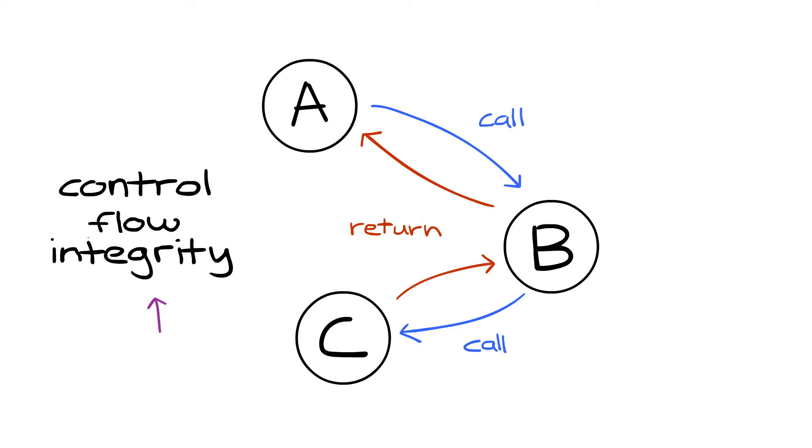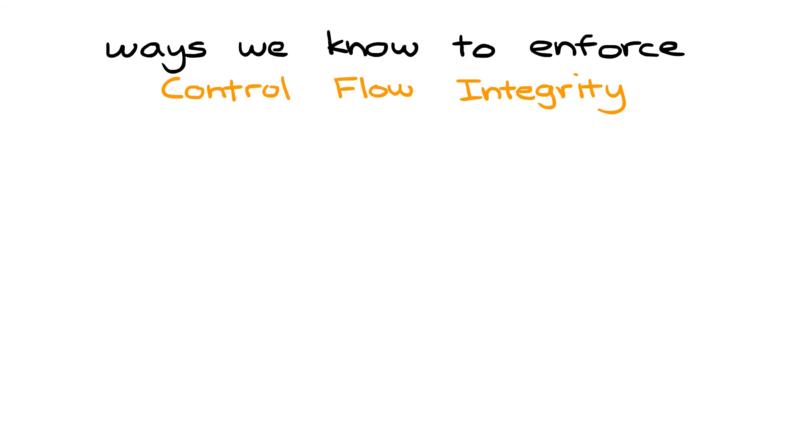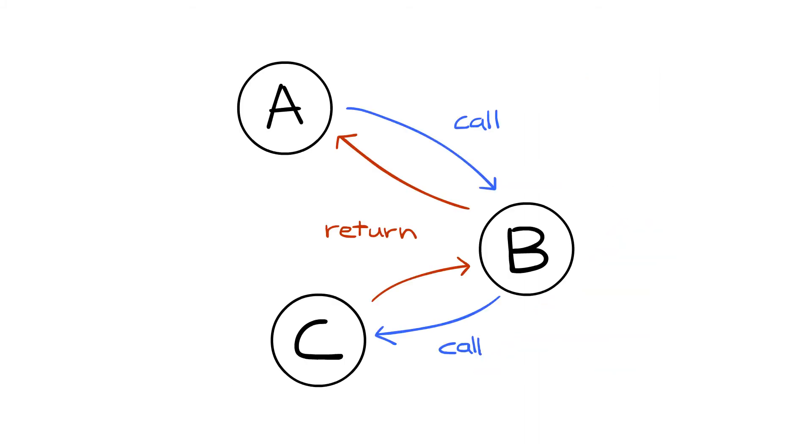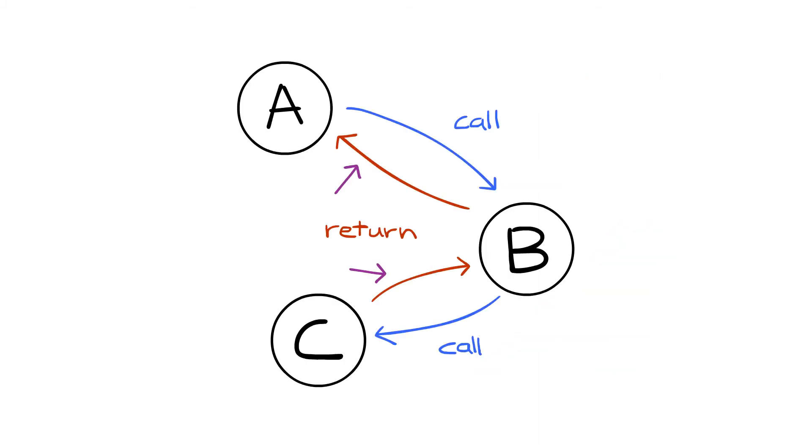Control flow integrity is a fancy phrase that basically means making sure these arrows don't point to other things. There are many different ways that we can try to enforce control flow integrity, but we've only introduced two so far, the shadow stack and stack canaries. They both protect the return edges of the control flow graph.